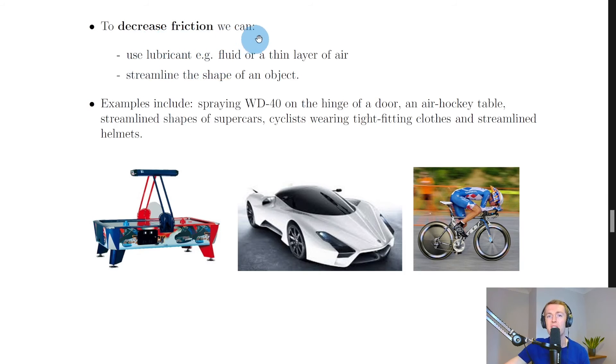Lastly, we have ways to decrease friction. We can use lubricant, for example, a fluid or a thin layer of air. Fluids could include things like oil such as WD-40 to spray on a squeaky hinge, or a thin layer of air such as in an air hockey table. We could also streamline the shape of an object, such as a car or a vehicle.